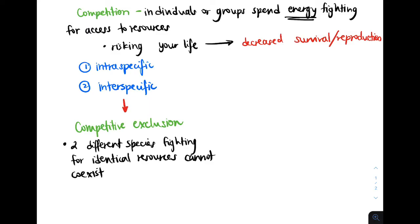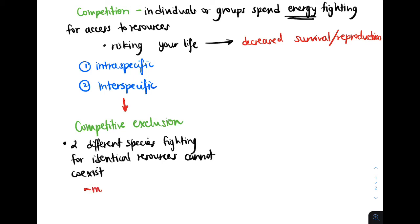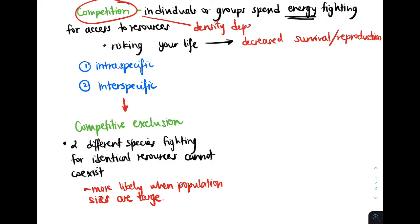Competitive exclusion means that two different species competing for the same resource cannot coexist in the same environment, because one species will be more superior and a better competitor. Two species are more likely to experience competitive exclusion if their population sizes are really large, because organisms of each species will be interacting and depleting resources. So competition is density-dependent — the more organisms, the more competition.